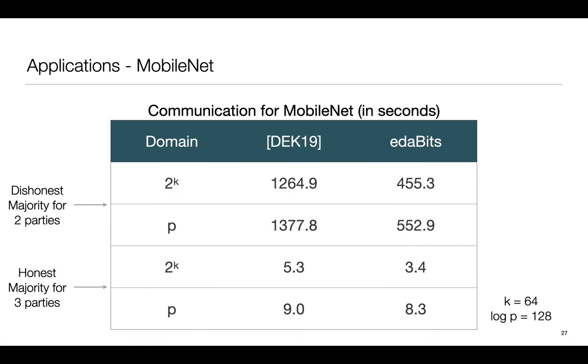In the end-to-end applications such as MobileNet, EDABITS is faster than DEK19 when comparing run times by about a factor 3 in the dishonest majority case and as fast as them in the honest majority case. In terms of communication, EDABITS is as efficient and in some cases more efficient than DEK19.